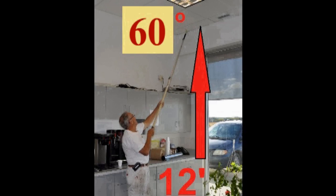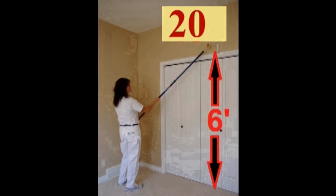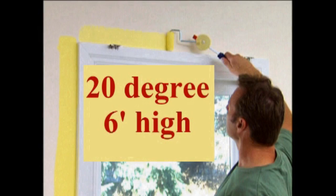Up to T-bar ceiling 12 feet high at a 60 degree angle. Up to the top of door frame 6 foot high with 20 degree angle reversed. And up to the top of a window frame 6 foot high with a 20 degree angle held in the hand.